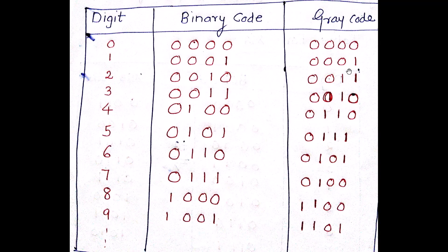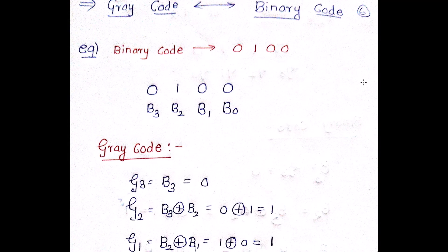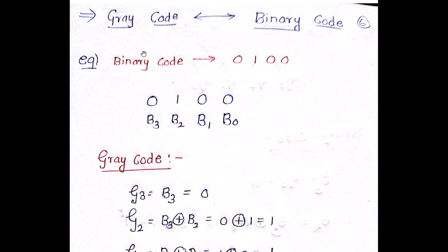For example, 0 is 0000, then 0001, then 0011 — each successive Gray code differs from the previous one by exactly one bit. So here it was 0 then got a 1; this 0 became 1, this 1 became 0, and all other bits remain the same.